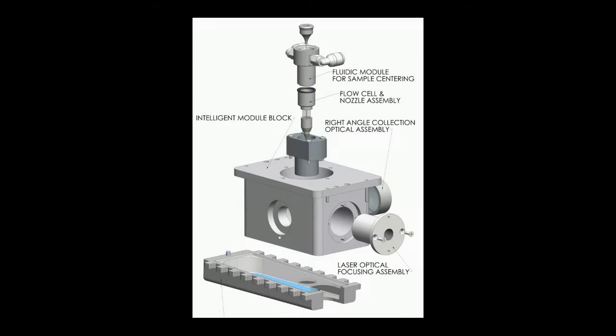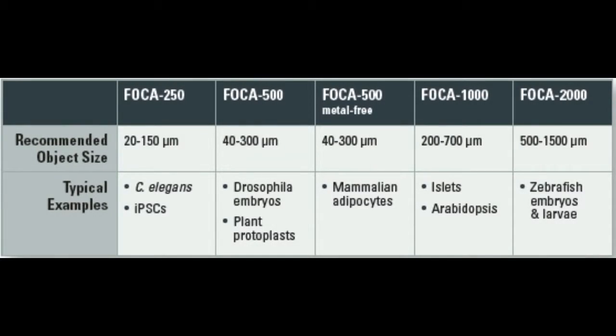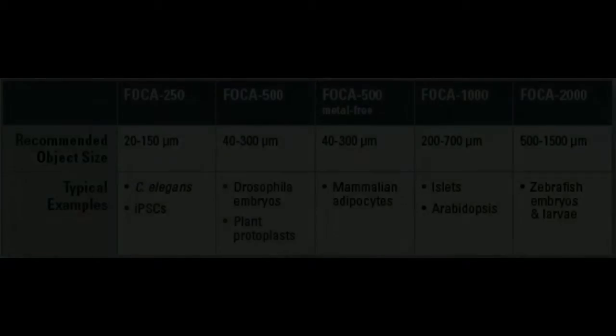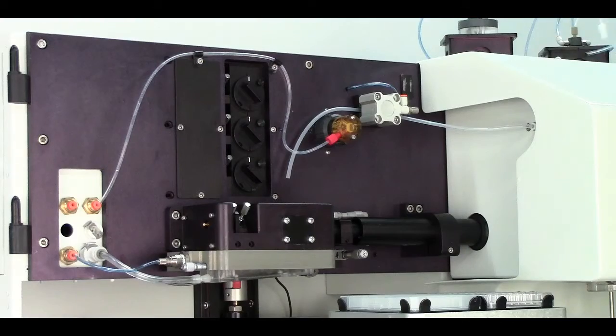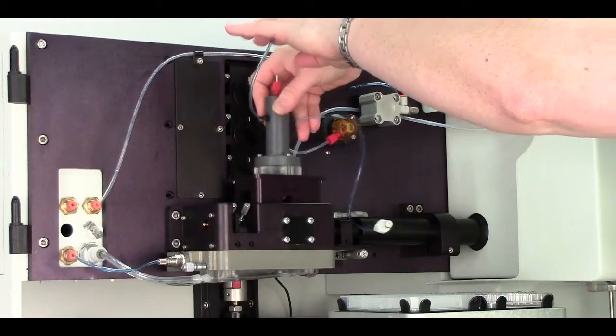Each FOCA module is a precision assembly of fluidics flow cell and its corresponding pre-aligned optics contained in a single swappable module. Each FOCA specializes in a subsection of the sample size range, but an operator can quickly and easily change FOCAs being used for various sample types. Additional FOCAs can always be added later, as the need arises.